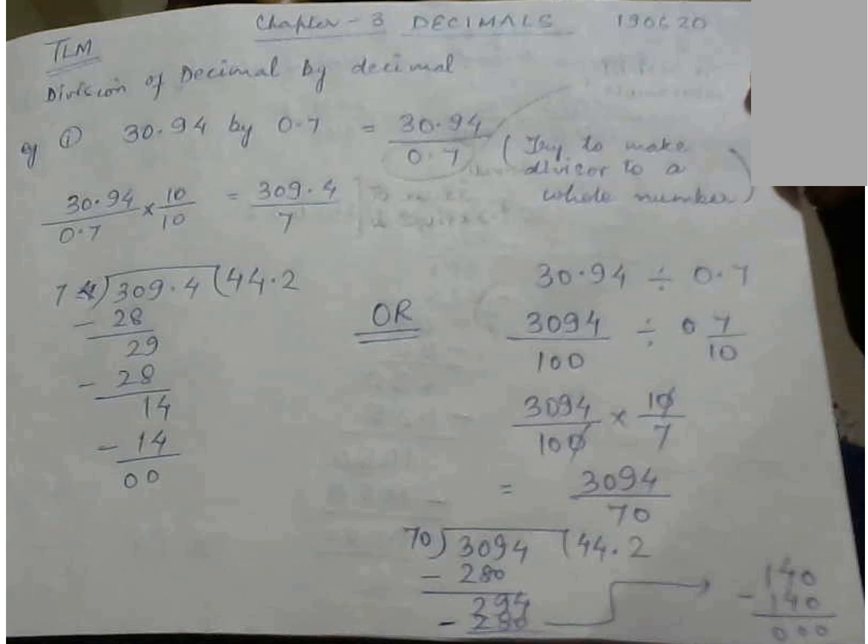So please see one example. Example given is 30.94 by 0.7. If you see both are the decimals numerator and the denominator. So 30.94 divided by 0.7.